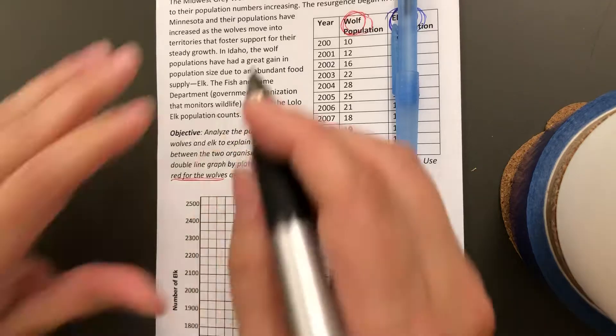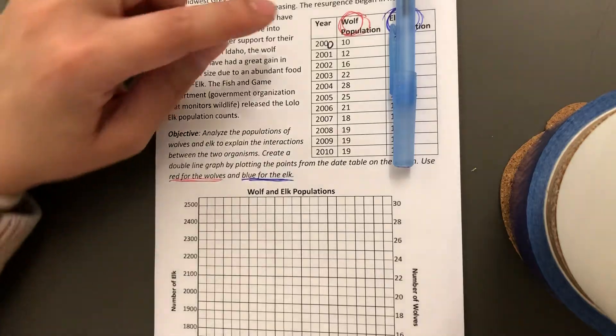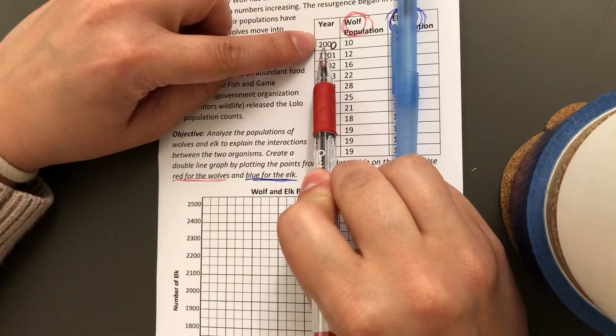Oh, and I see there's a typo, so it should say the year 2000, not 200. So in the year 2000, the wolf population was 10.